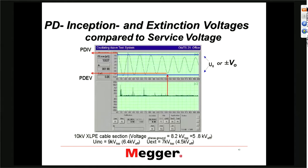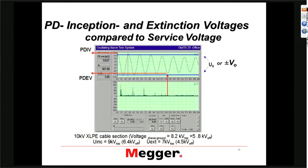Extinction voltage is also very important because partial discharge has what we call a hysteresis behavior. That means the inception voltage and extinction voltage are not identical. As you raise the voltage, you get an inception. As you decrease the voltage from the inception level, it will not extinguish at the same level, but typically at a lower level. What people really look for when they do PD testing is that the extinction level is above operating voltage, because otherwise you have constant PD on your cable.